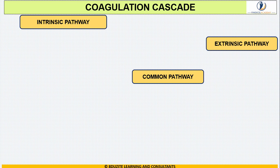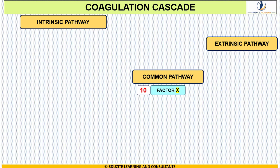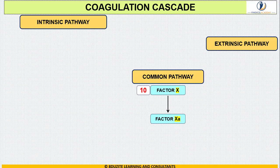First, the common pathway. In any type of sport — be it football, cricket, or hockey — there is a player number 10 who is the best player in the team and always remains in the center of the field. Similarly, Factor 10 remains in the center of the coagulation pathway, in the common pathway. Factor 10 is activated to Factor 10a — the letter 'a' means activated — and this activation occurs by members of both the intrinsic and the extrinsic pathway.